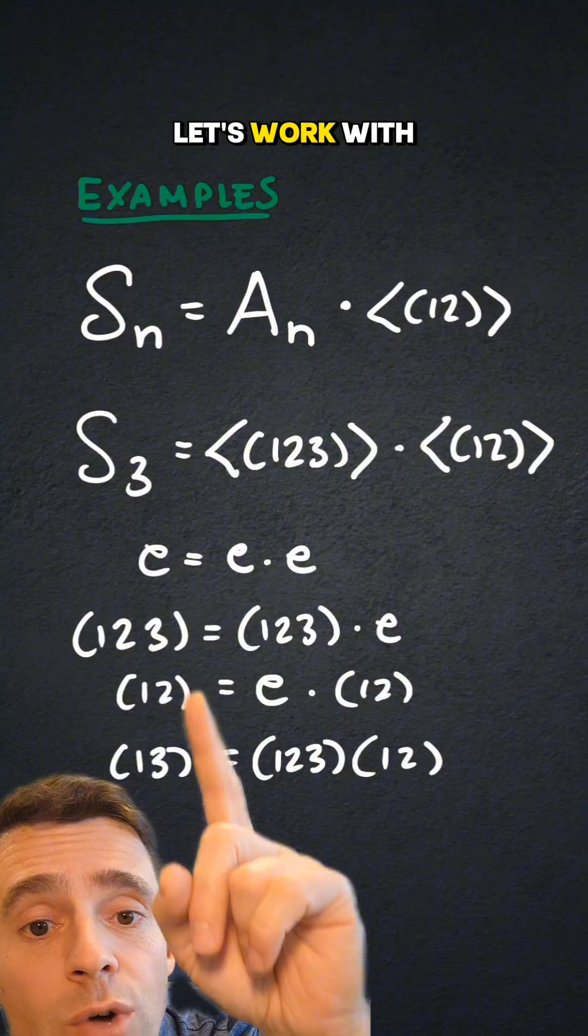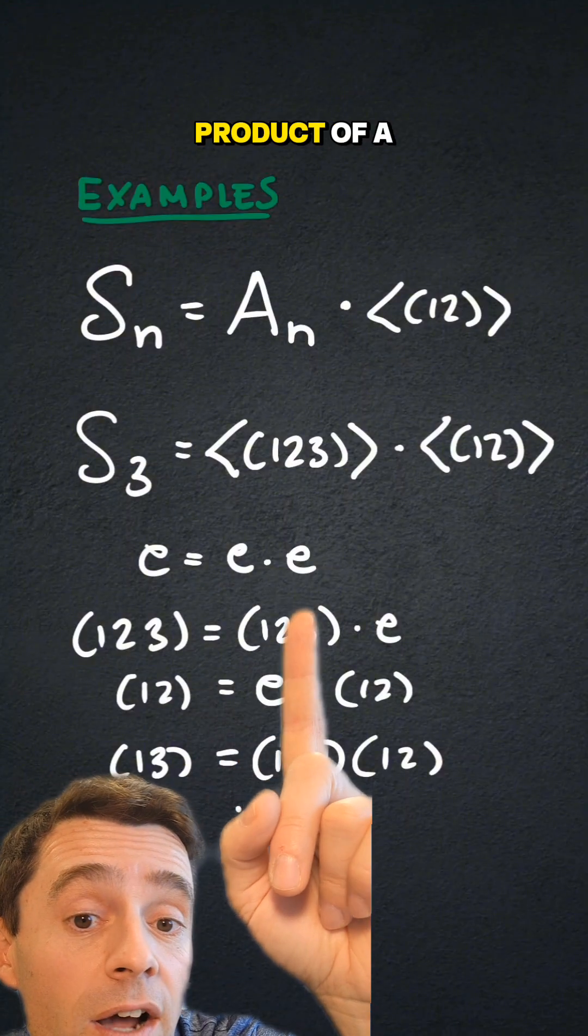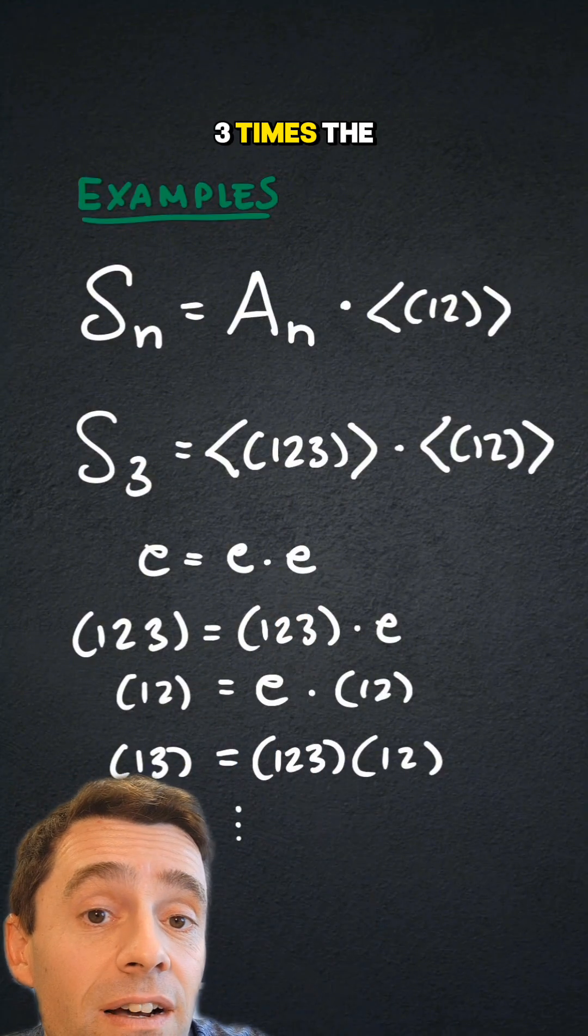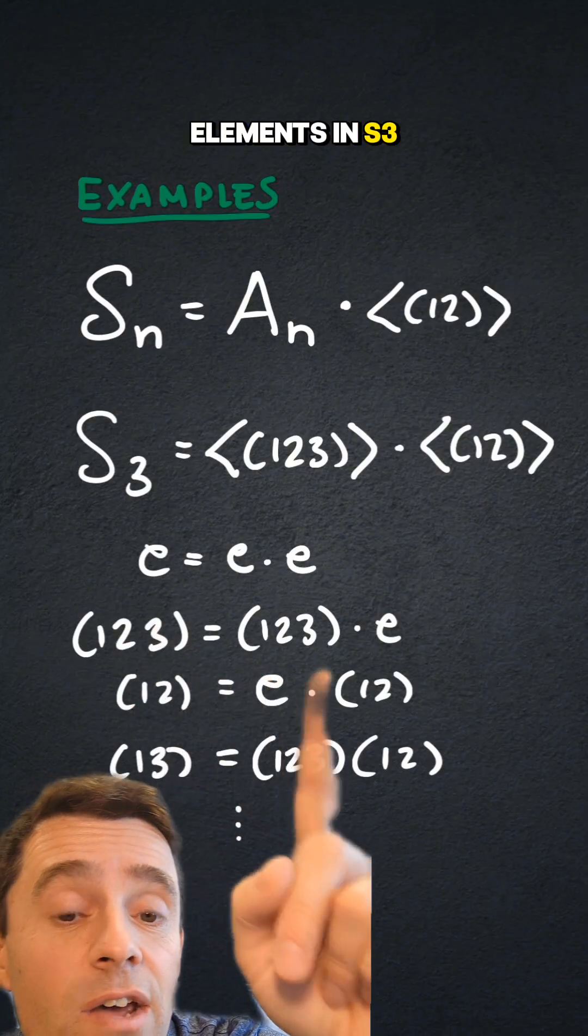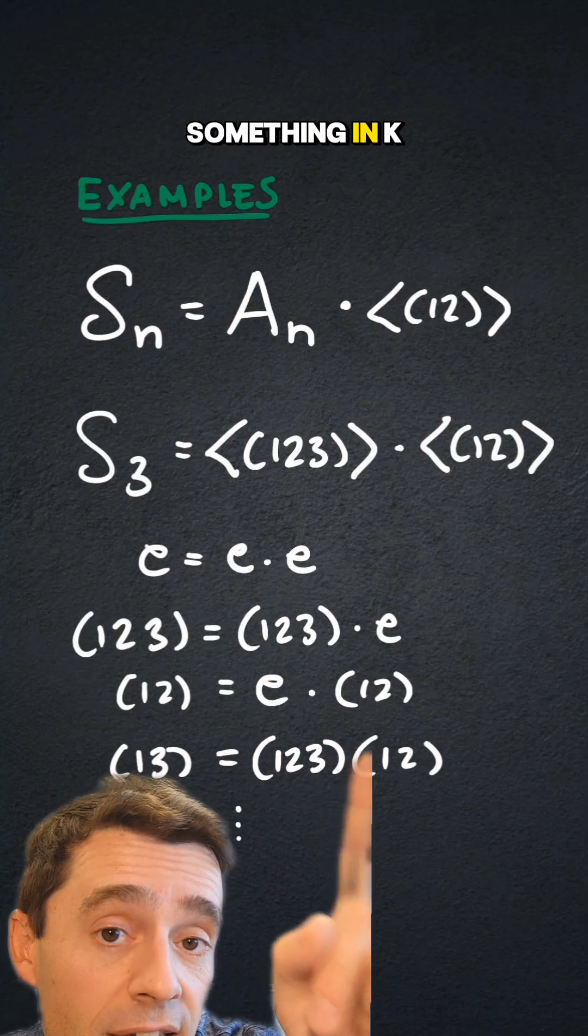To fix ideas, let's work with s3, which is the product of a3 times the subgroup generated by one, two, and you can see I've written here some of the elements in s3 written as something in h times something in k.